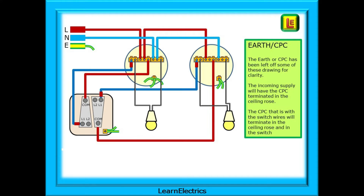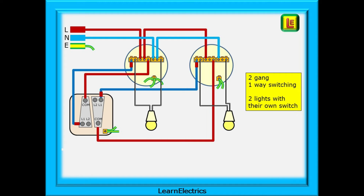To make it easier to follow the drawings, the Earth or CPC has been left off some of these drawings just for clarity. Do make sure that the CPCs are installed on the real circuit. The incoming supply will have the CPC terminated in each of the ceiling roses, and the CPC that is with the switch wires will terminate in the ceiling roses and in the switch. The existing two-lamp circuit should look something like this.